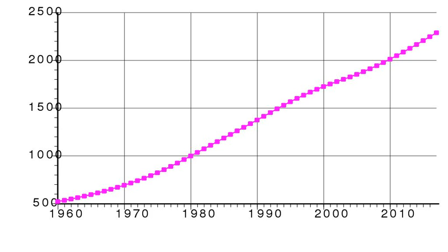Net migration rate: 3 migrants per 1,000 population (2009 estimate). Note: there is an increasing flow of Zimbabweans into Botswana and South Africa in search of better economic opportunities. Urban population: 69.4% of total population; rate of urbanization: 2.87% annual rate of change (2015–20 estimate).